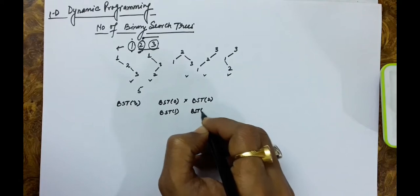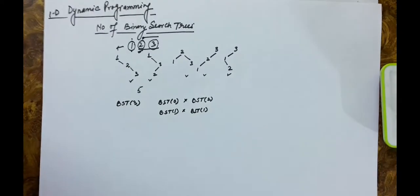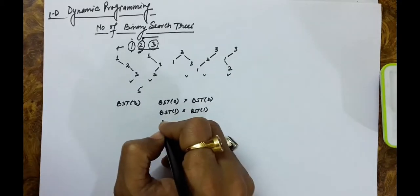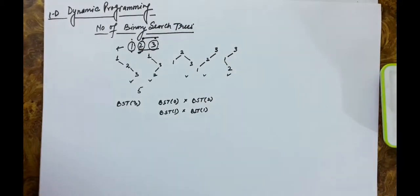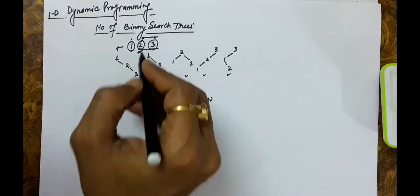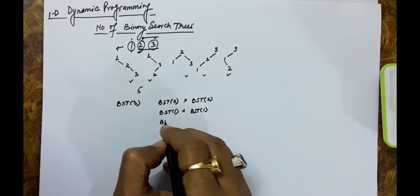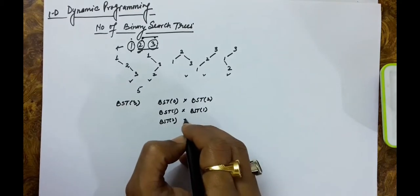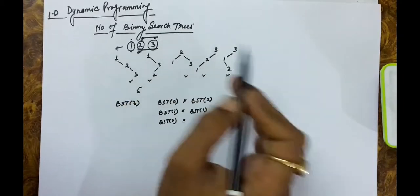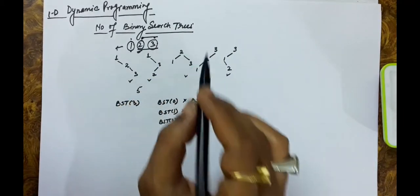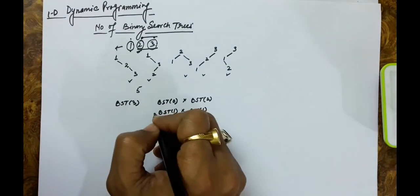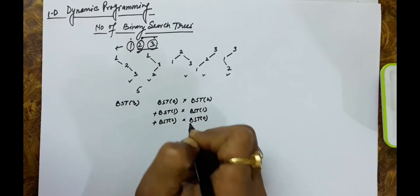With the second key as root, we multiply BST(1) on the left by BST(1) on the right. If we take the third key as root, two elements are on the left giving BST(2), multiplied by BST(0) on the right since there are no keys remaining. Summing all three cases gives the total number of trees with three keys.